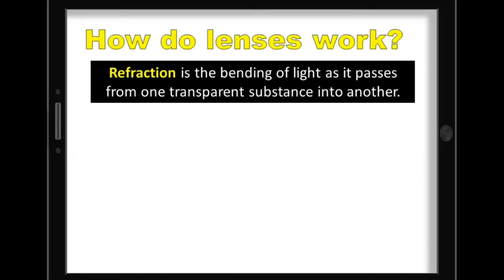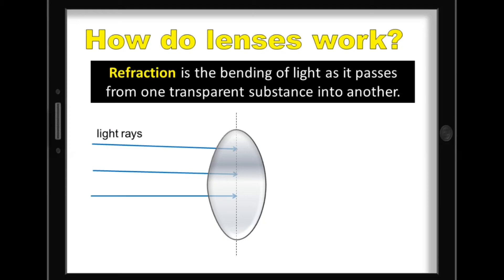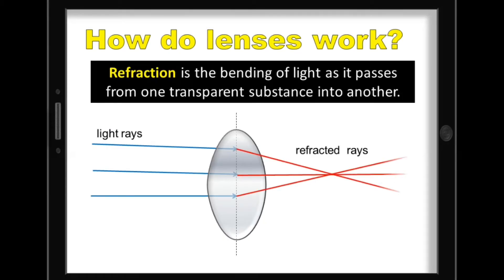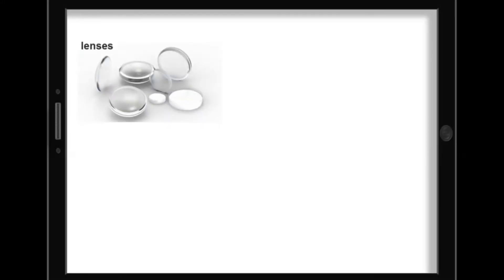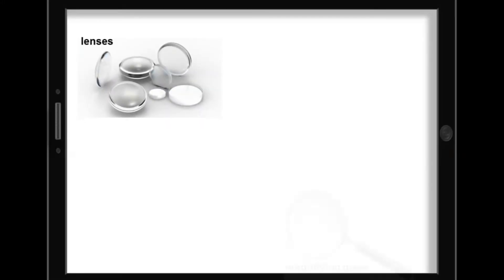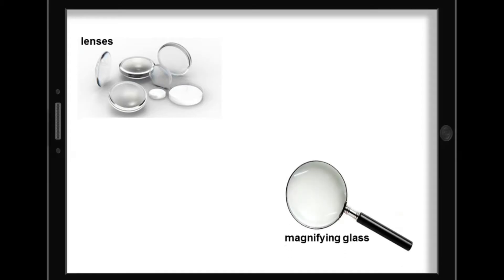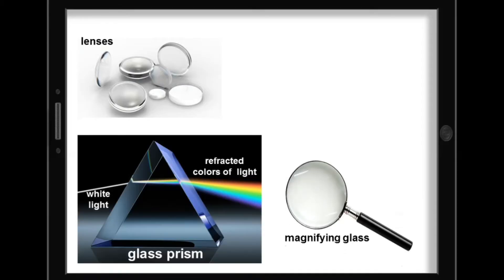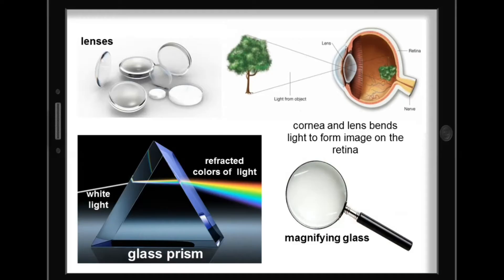How do lenses work? A lens works by refraction. It bends light rays as they pass through and change direction. This bending by refraction makes it possible for us to have lenses, magnifying glasses, prisms, and rainbows. Even our eyes depend upon this bending of light. Without refraction, we wouldn't be able to focus light onto our retina.